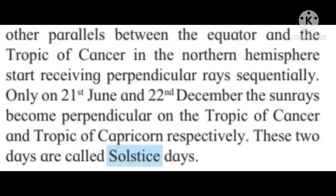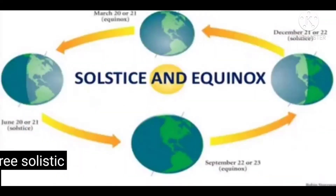The circle of illumination divides all the parallels from the north pole to the south pole equally on equinox days — occurring on 21st March and 23rd September. After 22nd March, other parallels between the equator and the Tropic of Cancer in the northern hemisphere start receiving perpendicular rays sequentially.